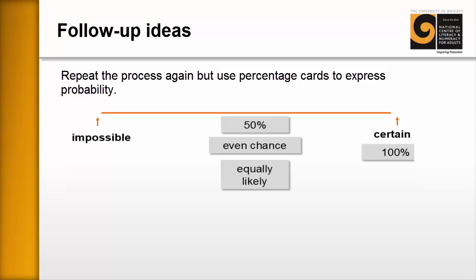So for example, we know that impossible would mean a 0% chance. Certainty would be 100% chance. And an even chance might be 50%. And from there, you could move into zero to one and so on and more complex ideas, which is where you'd want to go.